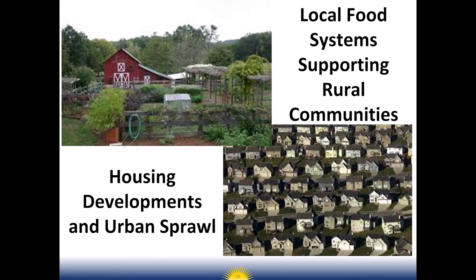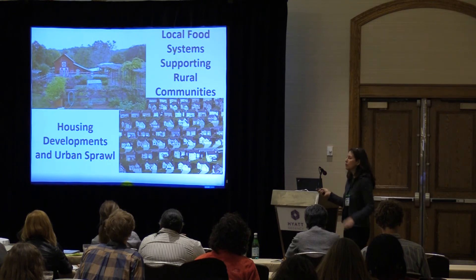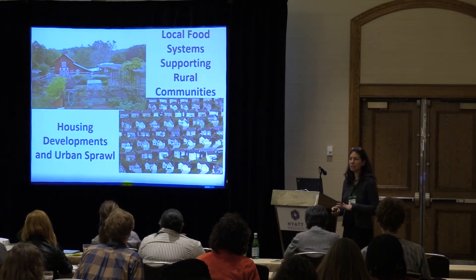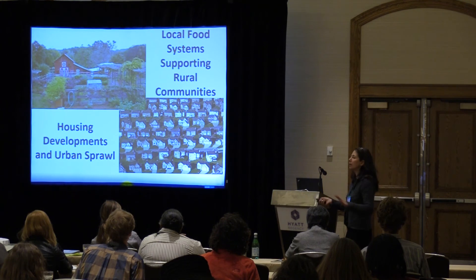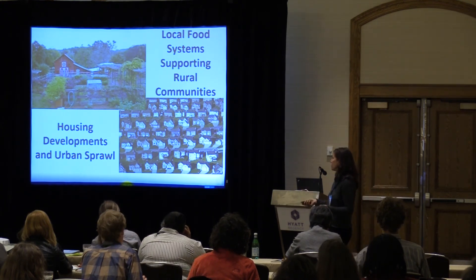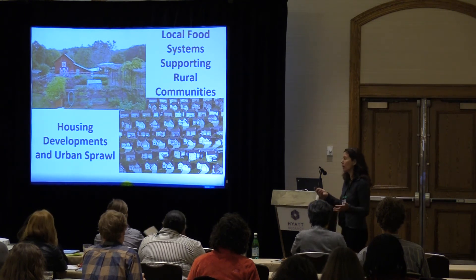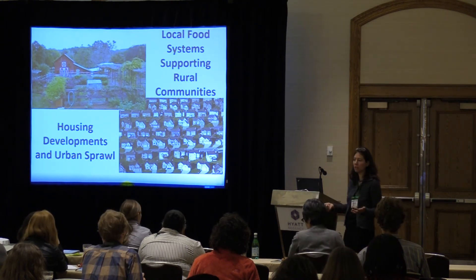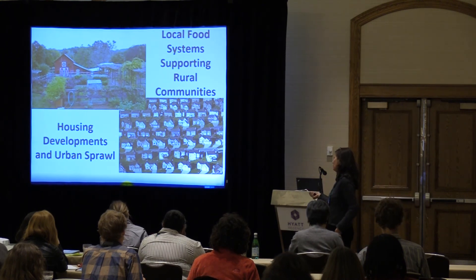Local food systems support rural communities and also feed urban towns and cities. The contrast shows housing developments and urban sprawl — the more developed the land, the more concrete, the more runoff and pollution going into our waterways versus infiltration. The less development you have, the more water infiltration, and that's another environmental benefit.